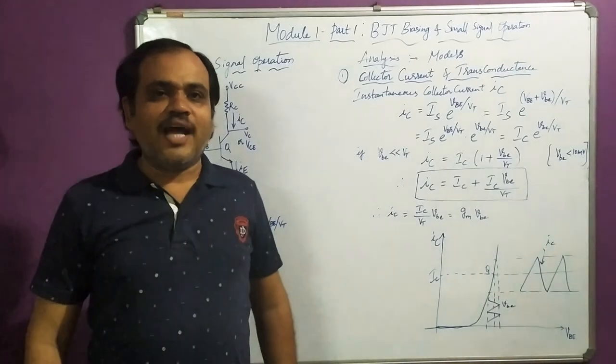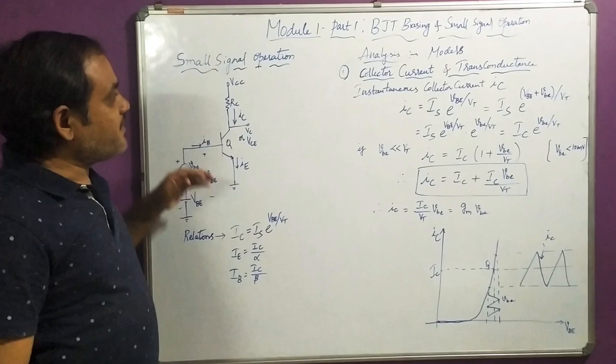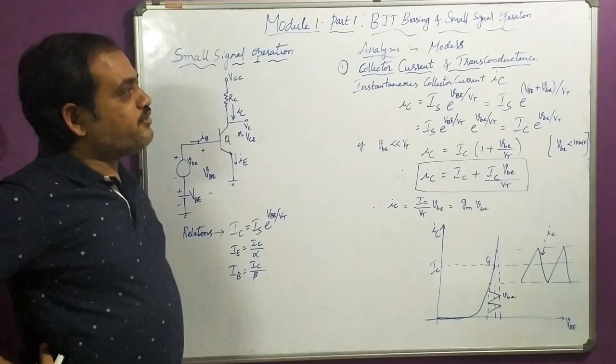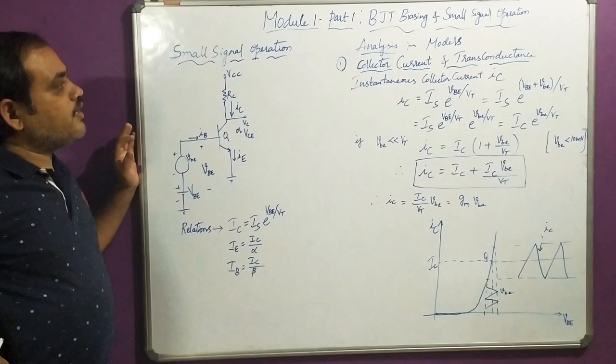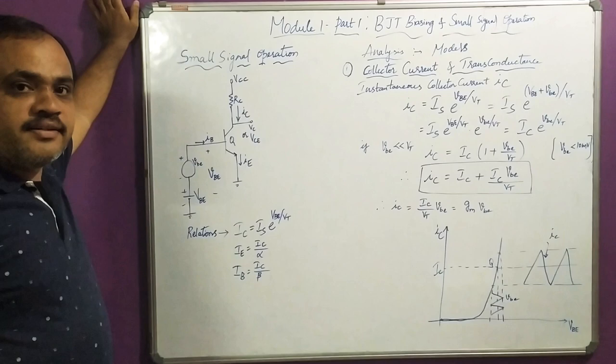Hi everyone. In today's session we are going to discuss small signal operation of the transistor or BJT. In our last session we discussed different biasing techniques for the transistor. Now we are going to see how small signal operation is going to be performed for the transistor to work as an amplifier.